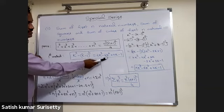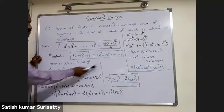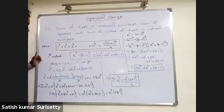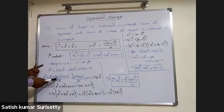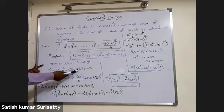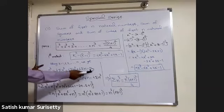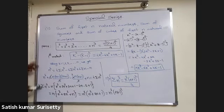So n to the power 4 equals 4 into sigma n cubed minus 6 into sigma n squared plus 4 into sigma n minus n. Taking the known terms to the left side: n to the power 4 minus 6 sigma n squared on the left, substituting sigma n squared as n into n plus 1 into 2n plus 1 upon 6, minus 4 into n into n plus 1 upon 2, plus n equals 4 into sigma n cubed.